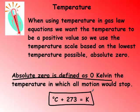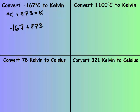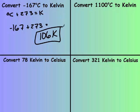Notice there's no degree sign on Kelvin. In these problems, you need to convert between Celsius and Kelvin. Since they gave us Celsius in the first problem, we just add 273 and get 106 Kelvin.